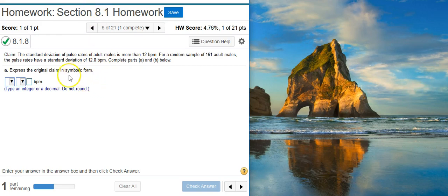Okay, Part A asks us to express the symbolic form of the original claim. So to do that, we first look in our problem statement to see where the claim is. The claim is this first statement here in the problem statement: The standard deviation of pulse rates of adult males is more than 12 beats per minute.